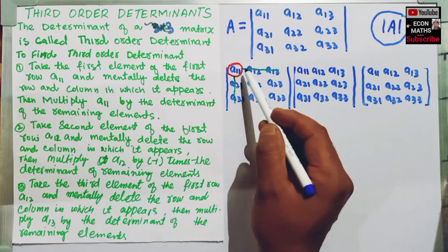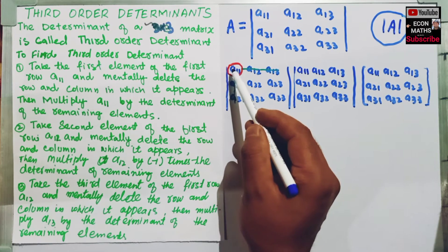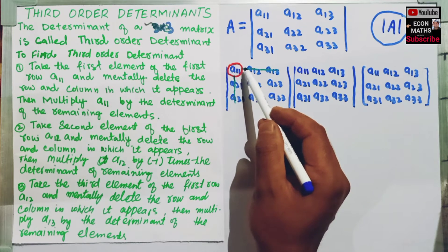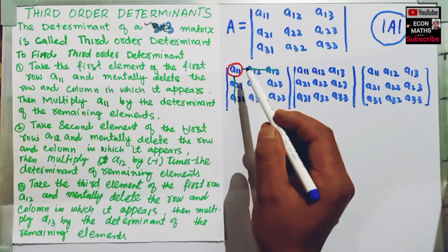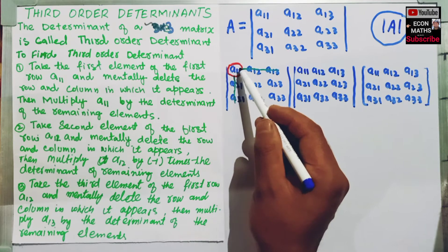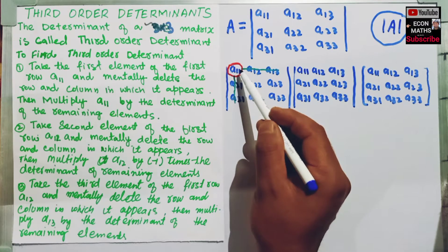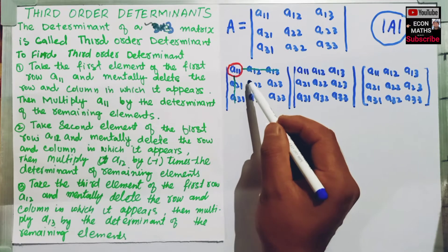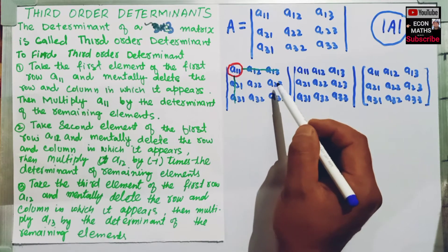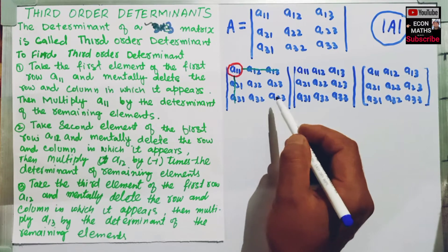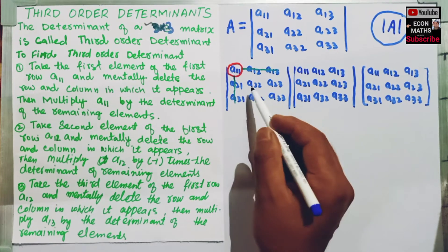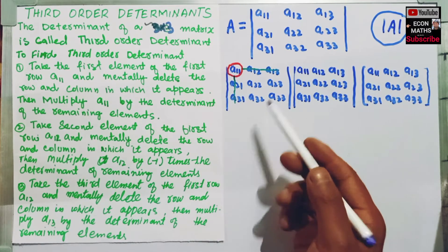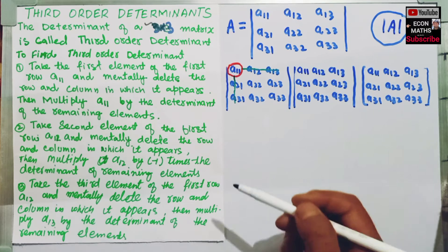We take A11 and mentally delete the row and the column in which it appears. Then we multiply A11 by the determinant of the remaining elements. Here, the remaining elements are A22, A23, A32, and A33. This gives us a second order determinant, which we have seen how to find in earlier videos.